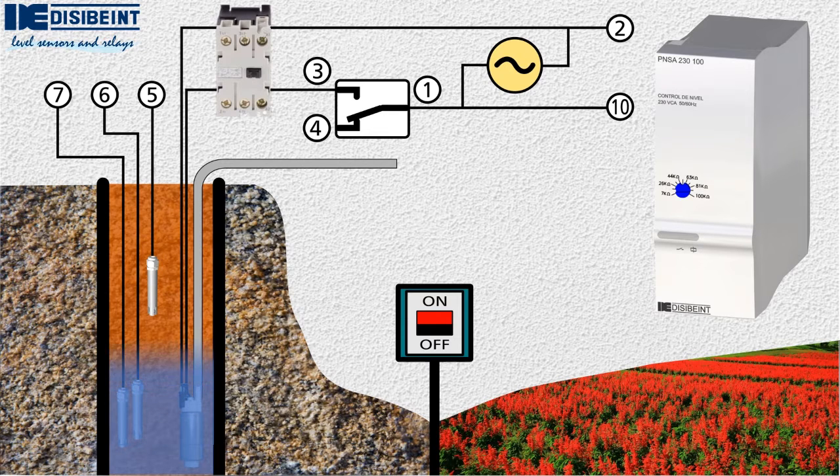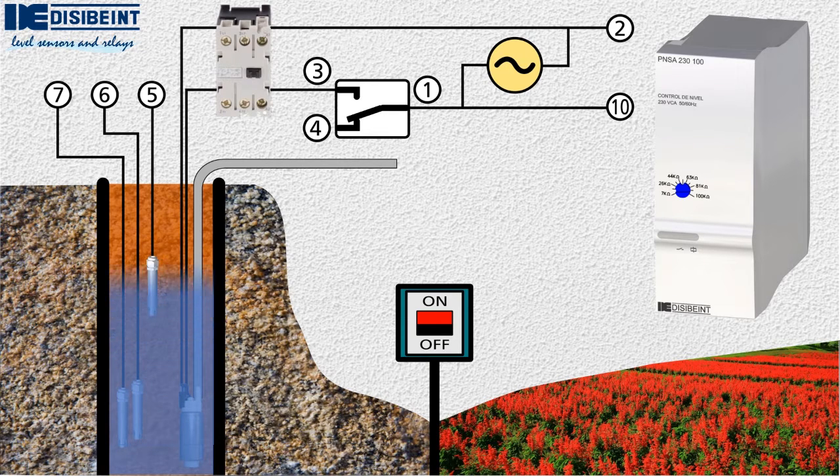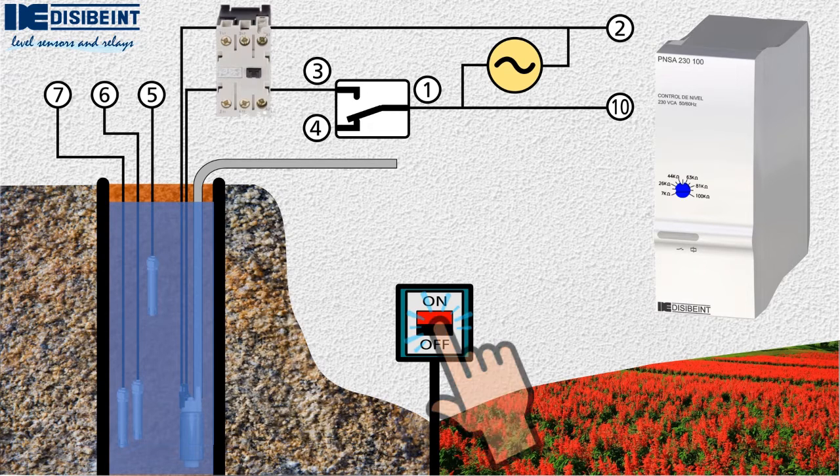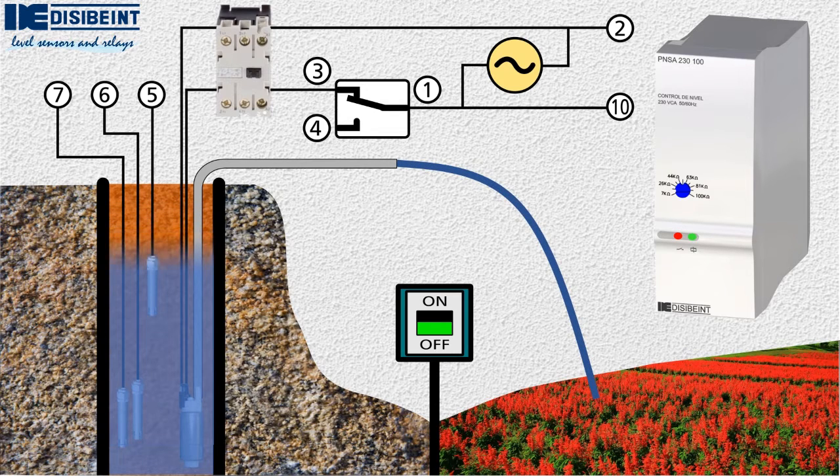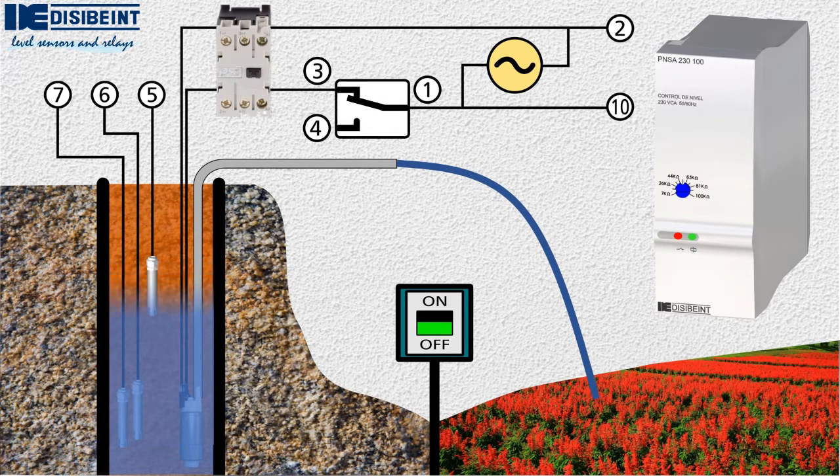Let's start our automation assuming that the well is full of water. When applying voltage to the system, the relay is activated and the pump starts. The green LED for voltage presence and the red LED for activated relay light up.